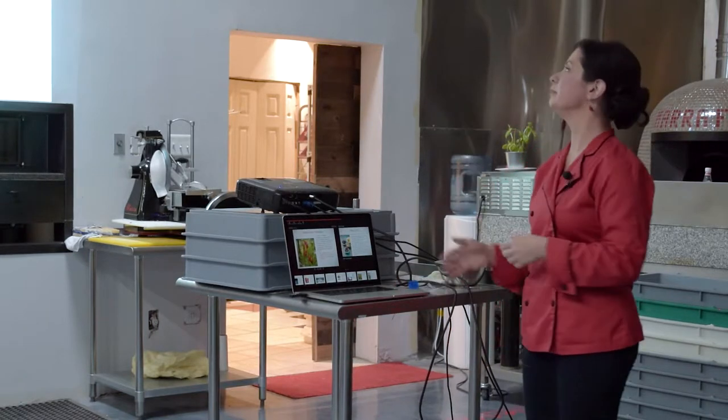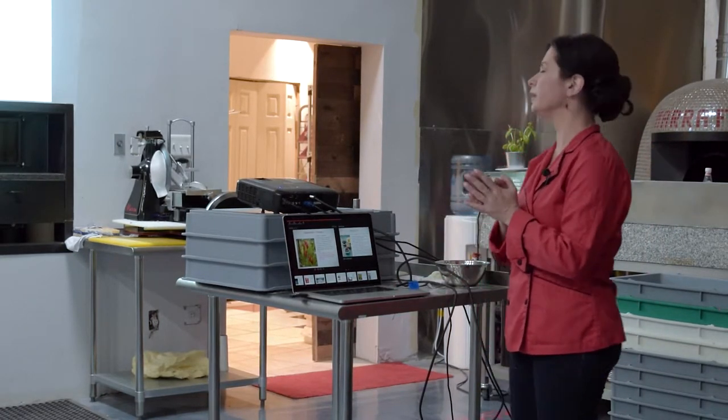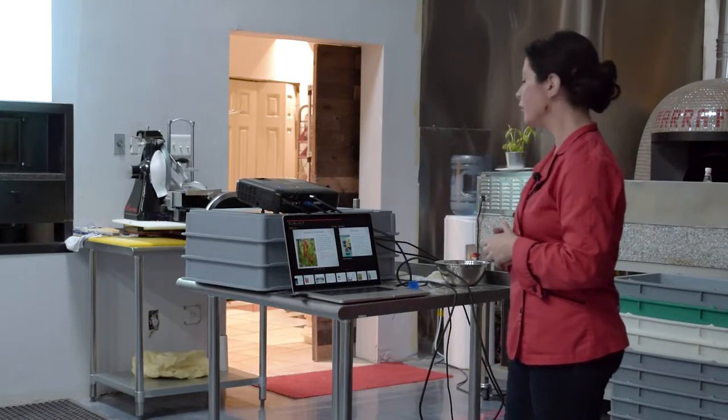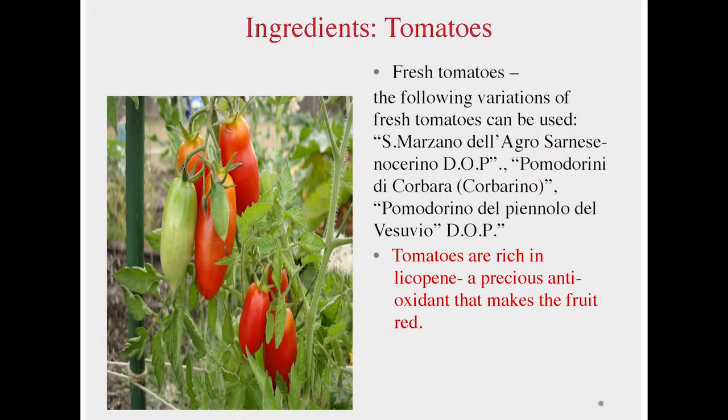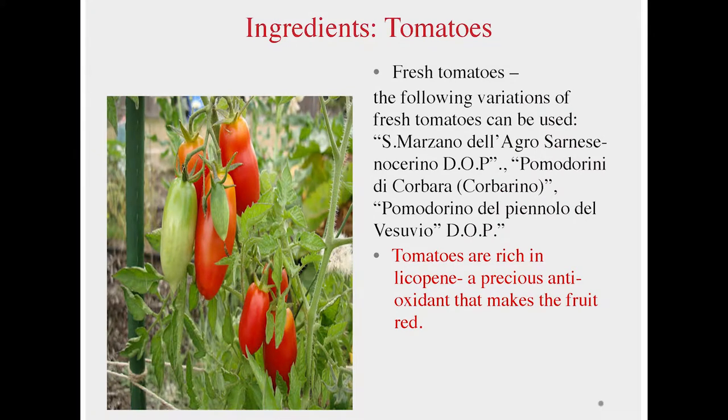And then we come to the tomatoes. So to be the authentic Neapolitan pizza, we have to use a certain type of tomatoes. So we have the San Marzano, that's a DOP. We have the Piennolo, the Corbarino, which is also a great product. The Piennolo del Vesuvio, which is DOP. So Vesuvio, you all know about the volcano, right? Vesuvius.